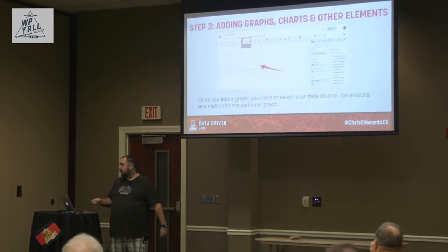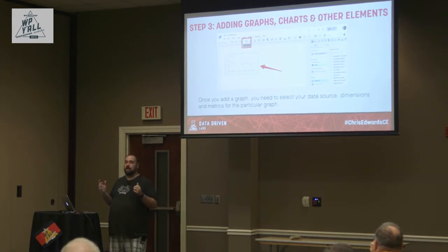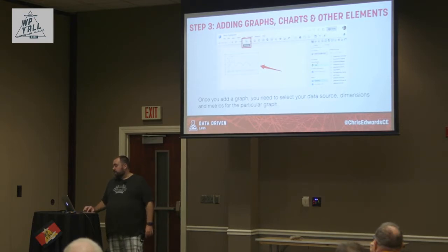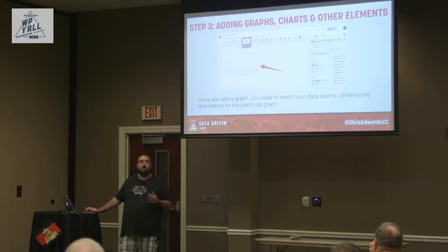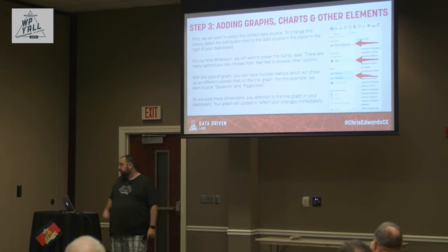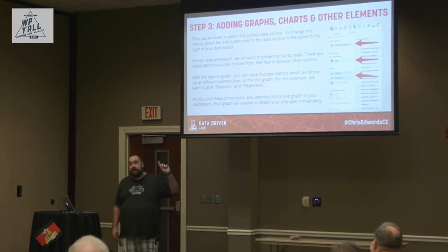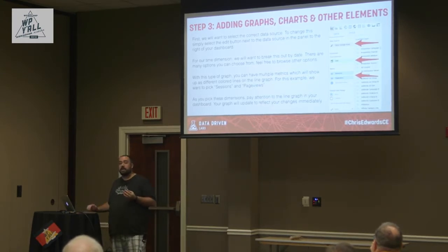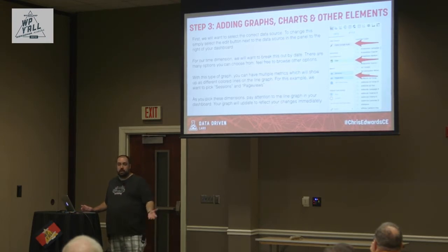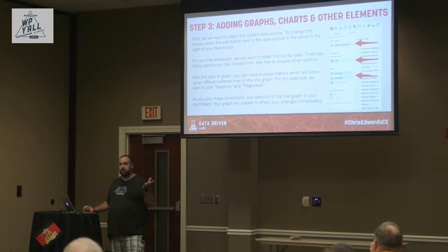For the time series chart, you literally drag a box about the size you want. It automatically picked a time dimension of 'date' and a metric of 'sessions,' since most people who create time series want sessions. You have the ability to change that though — over in the side panel you can pick your data source, your time dimension, and your metrics. We kept sessions and then hit 'Add Metric' and added page views, so we can see both sessions and page views on the same chart.